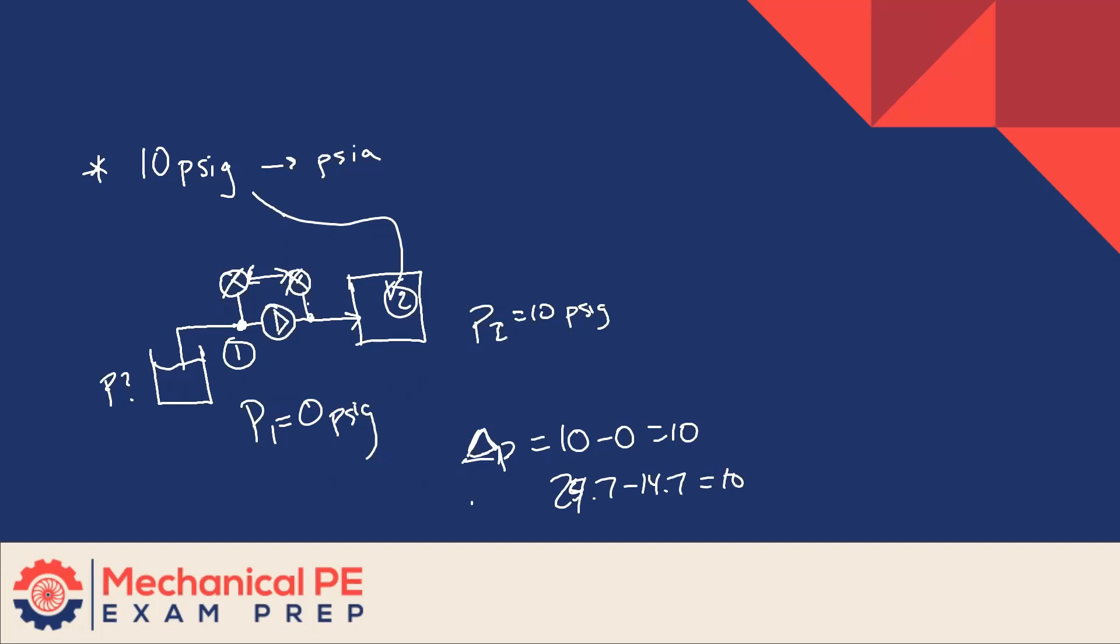But when I put like absolute, like 10 plus 14.7 for that one, then I will get the wrong answer on that. No, because you have to add 14.7 to this as well. Atmospheric pressure is 14.7 PSIA. So this is the PSIG calculation, this is the PSIA calculation, but they both equal 10.